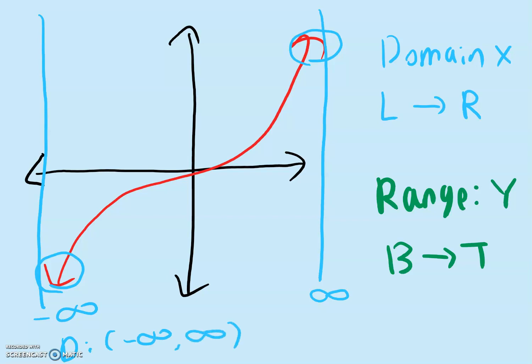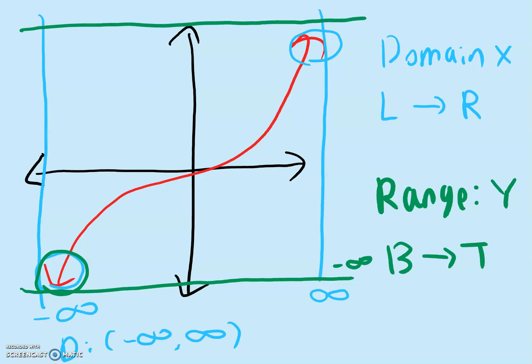Notice how we use round brackets because you can never reach infinity. For the range, we start at the bottom, so a line at the bottom of the graph. We have an arrow, and you see this arrow is also going down forever, so we call that negative infinity. On the top, we have another arrow going up forever, so we call that positive infinity. So the range is going from negative infinity to positive infinity.